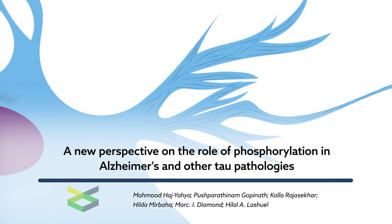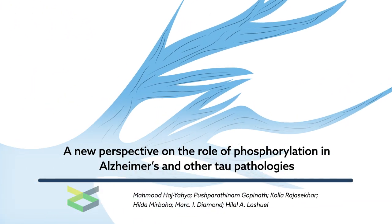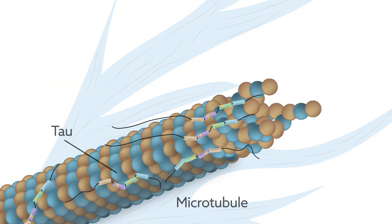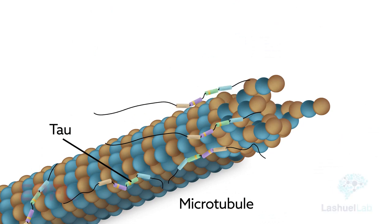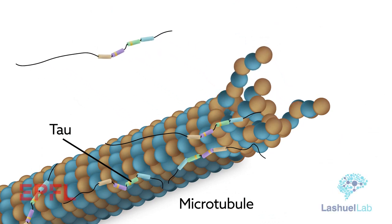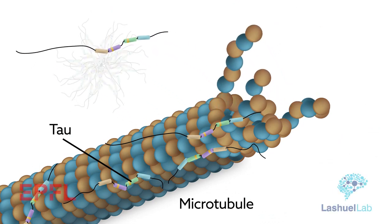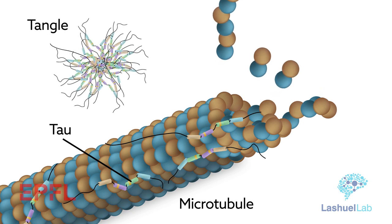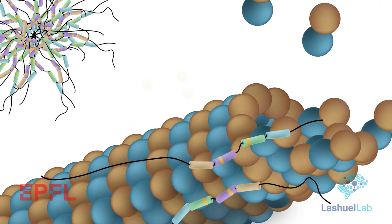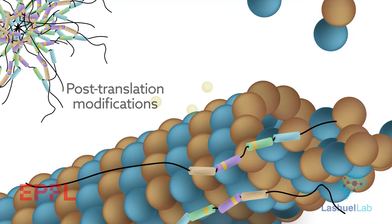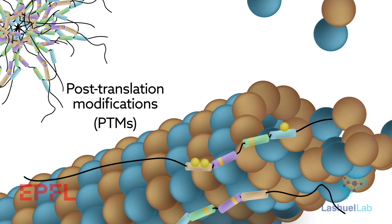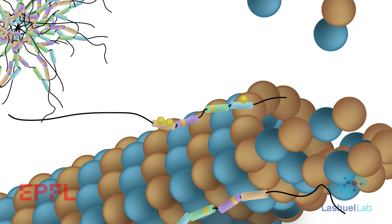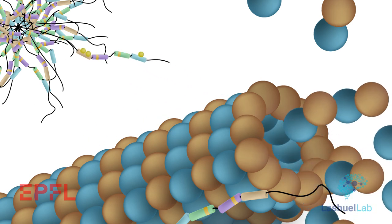Normally bound to the microtubules that give neurons their structure, the protein tau becomes detached in the brains of patients with Alzheimer's disease. That leads to the fibrillary tangles that have become the hallmark of the disease. Most textbooks explain that post-translational modifications, or PTMs, in the form of excessive phosphorylation trigger the formation and growth of these bundles.